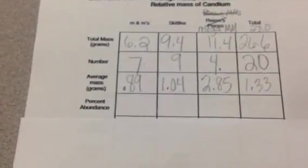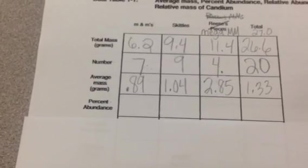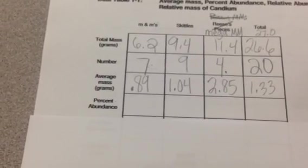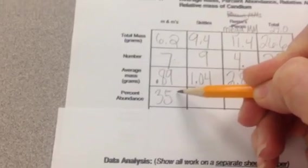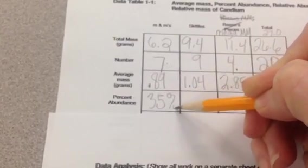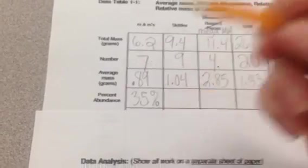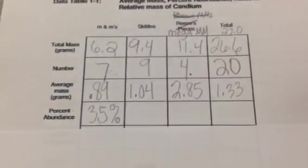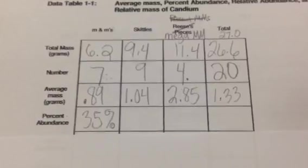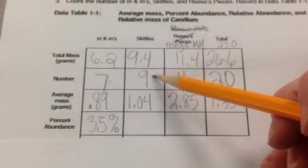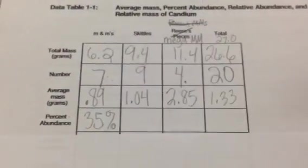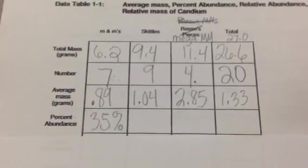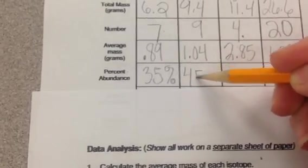So 7 divided by 20, and then times 100 is going to be 35%. So that means you would find M&M isotopes 35% of the time. Skittles are going to be 9. Remember, we're still doing the number divided by 20. 9 divided by 20 equals 0.45 times 100 is going to be 45%.